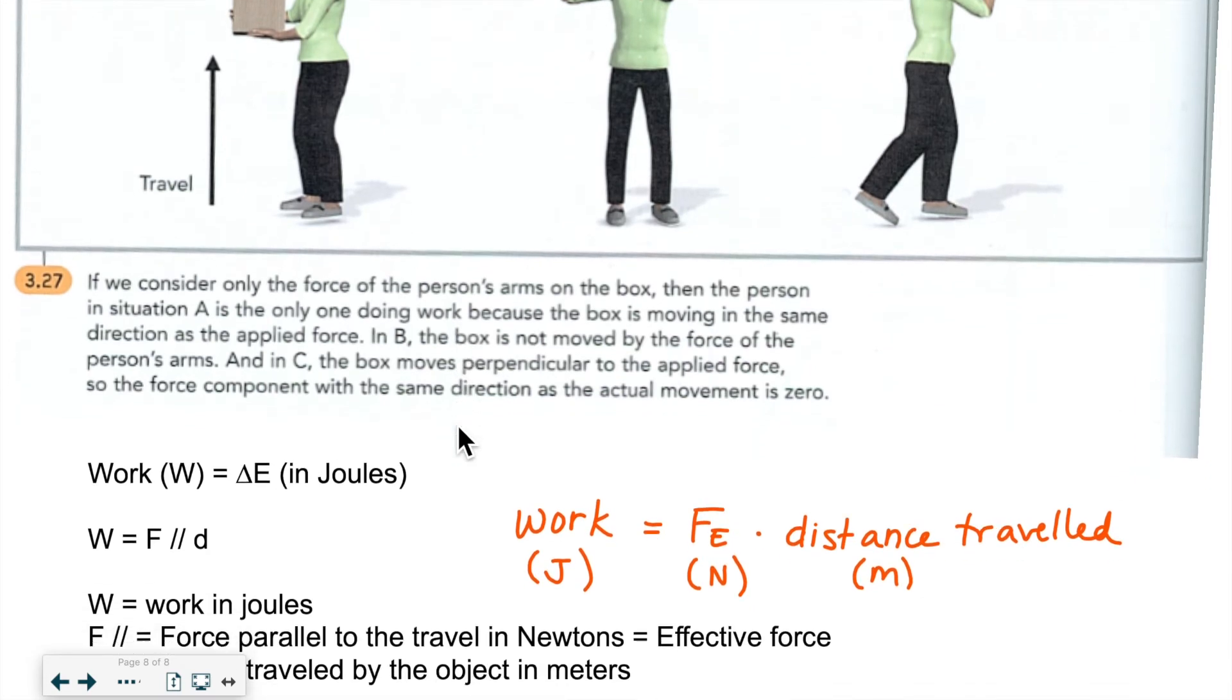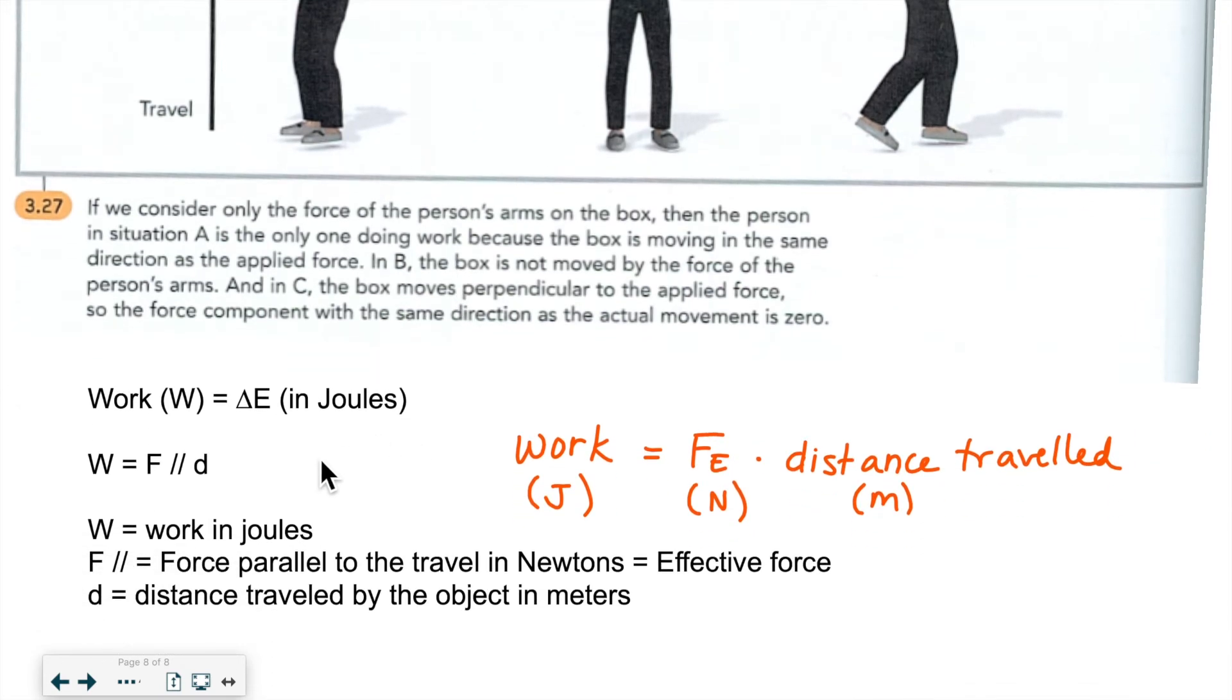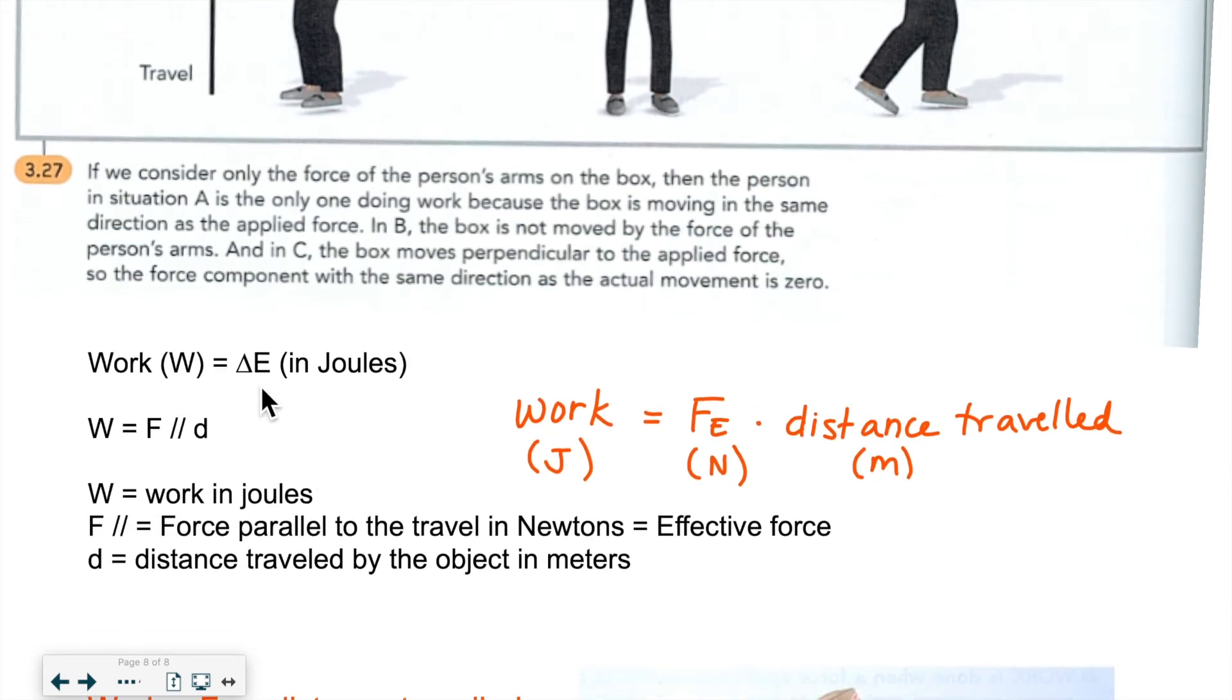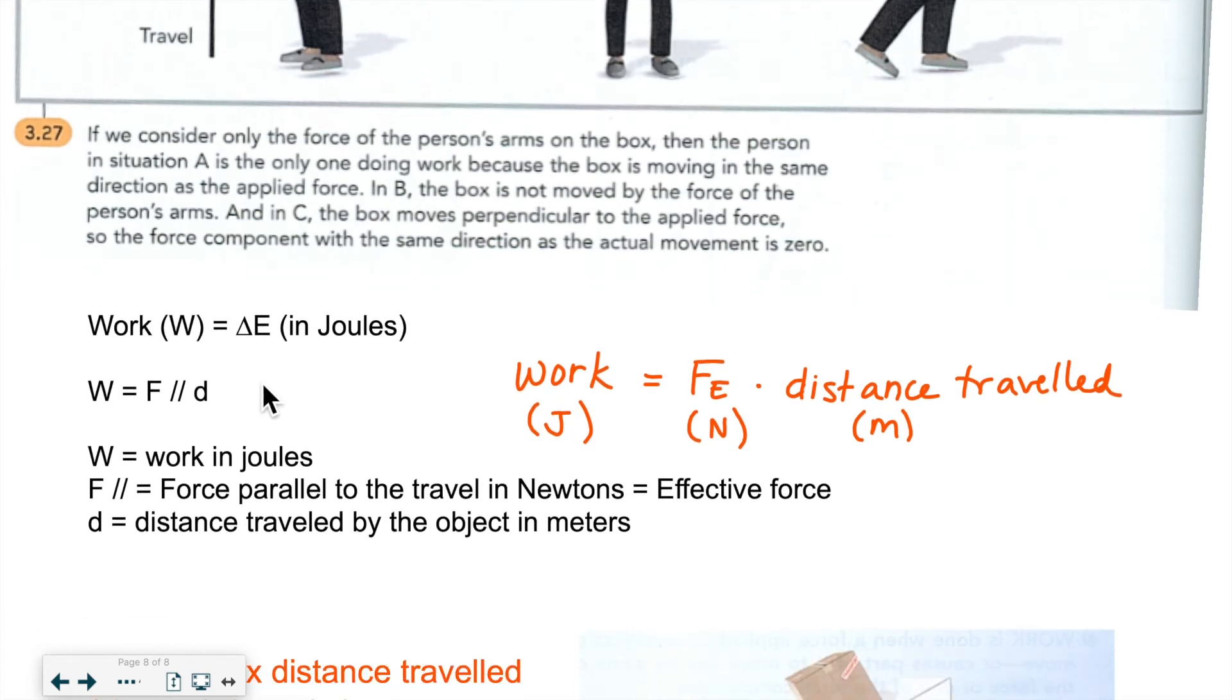So how do we calculate work? Work is a type of energy, so it is measured in joules. This is normally how we express the equation: work is equal to force, and d is for distance, and this little squiggly is for parallel, so the force has to be parallel to the distance covered.